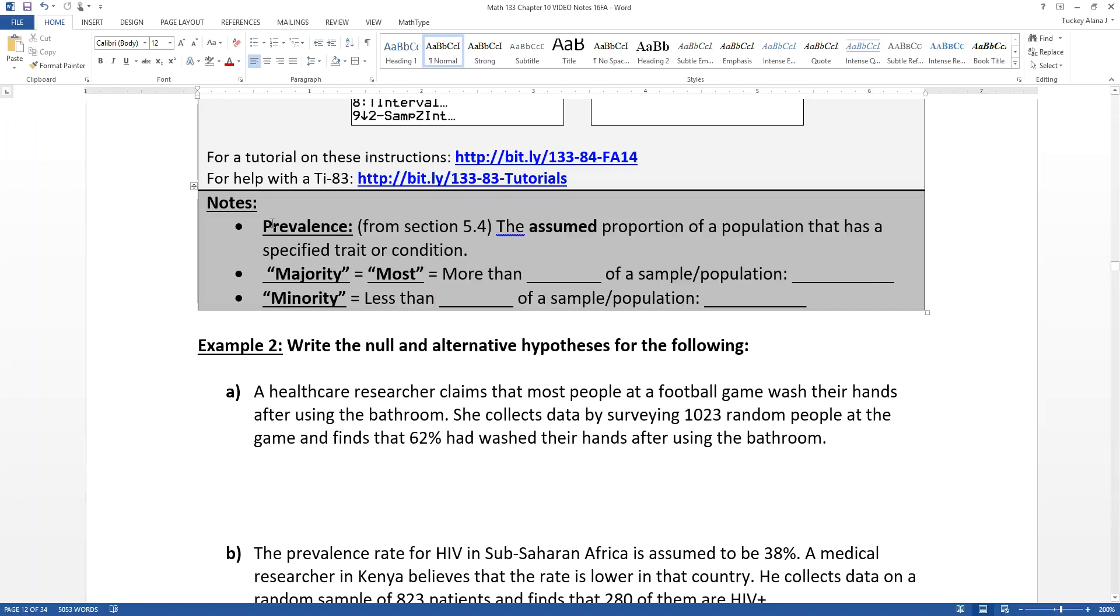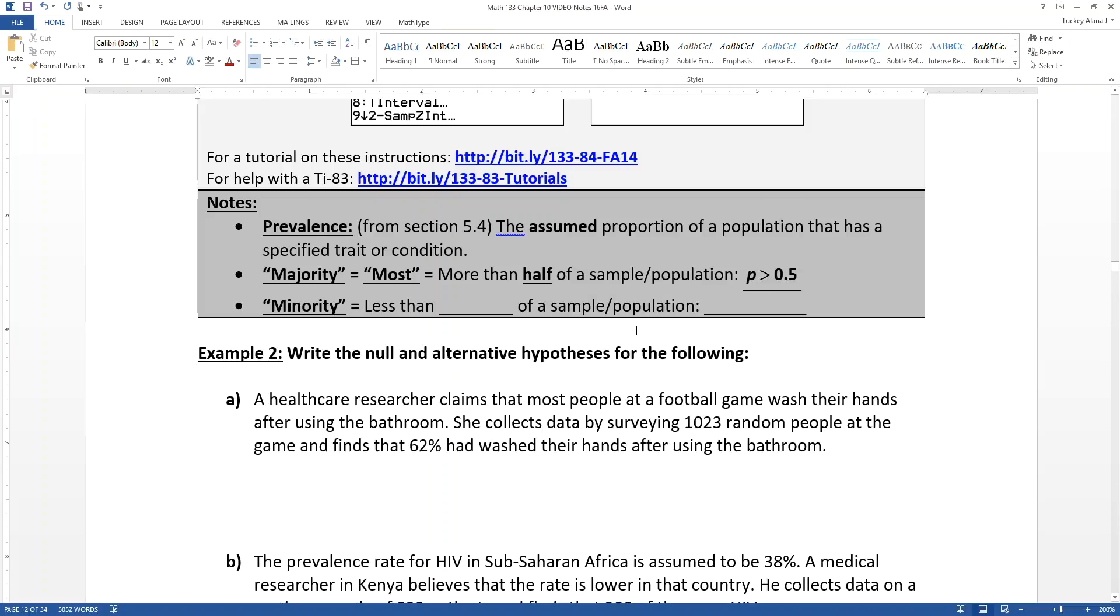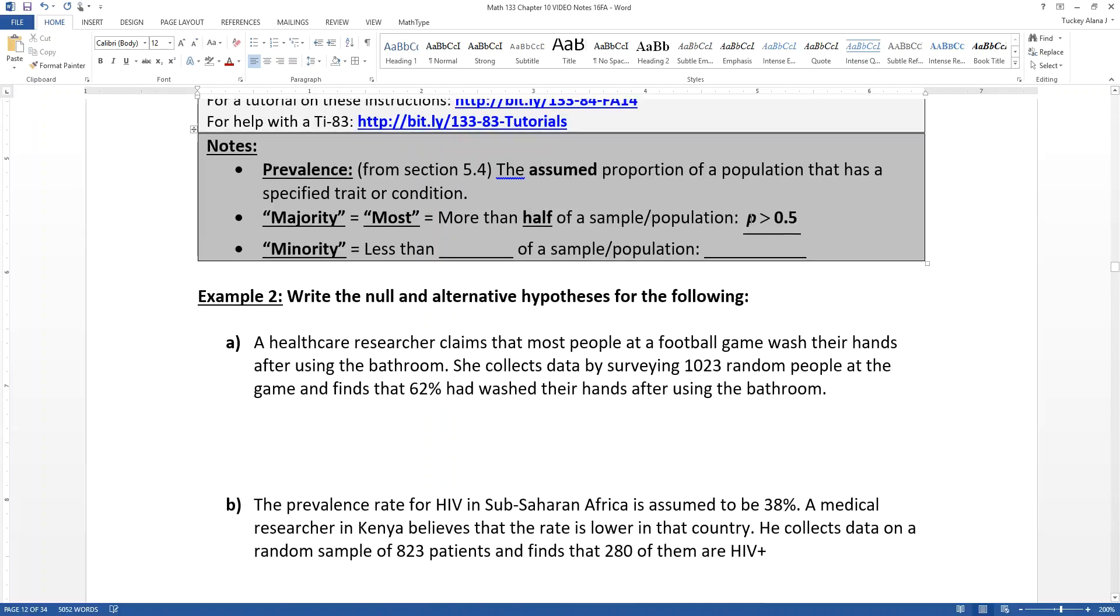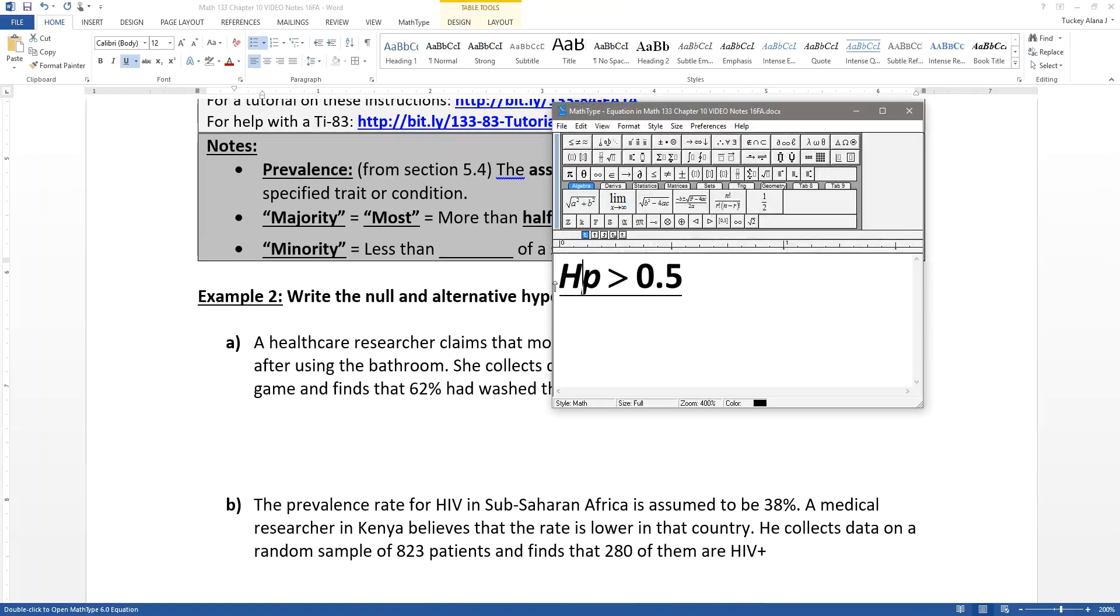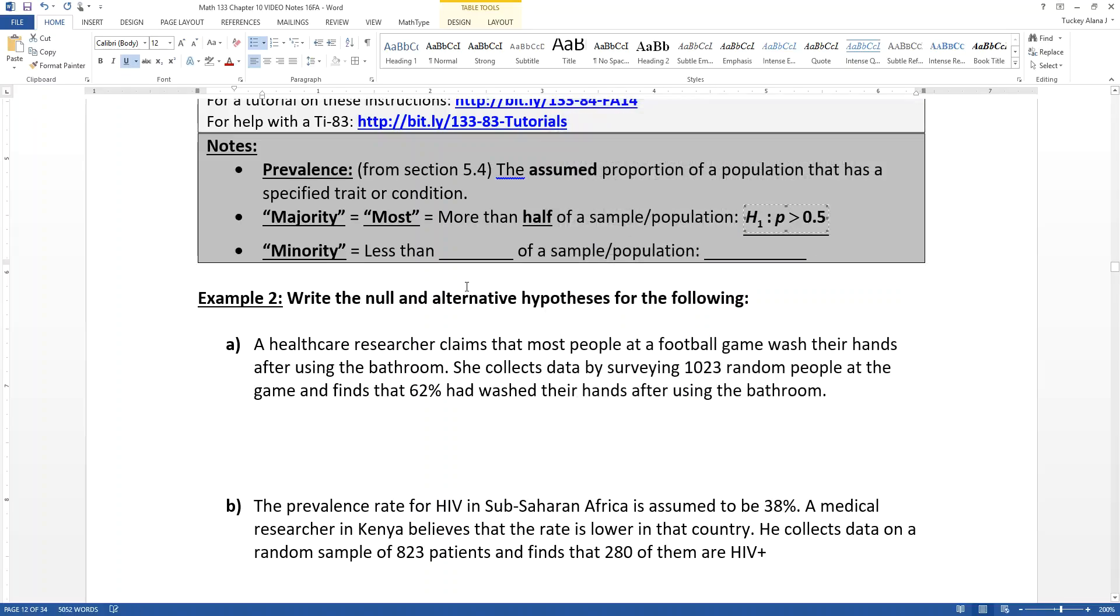We also know that majority means more than half of the population. In other words, P is greater than a half. So if you see the words most or majority of people, that means more than half. So you're talking about an alternative hypothesis, that your alternative hypothesis H1 would be that P is greater than 0.5, which means of course that your null hypothesis must be that it's equal to 0.5.